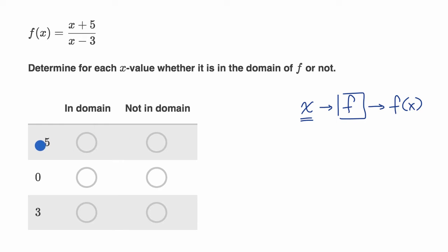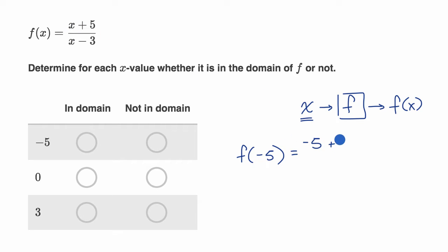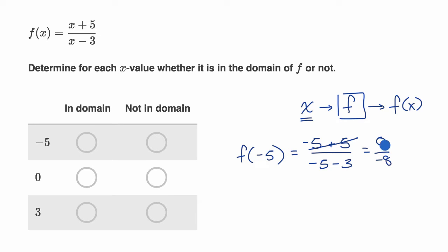So let's try these different values. Is x equal to negative five in the domain of f? Let's see what happens if we try to evaluate f of negative five. In the numerator we get negative five plus five, and in the denominator we get negative five minus three, which equals zero over negative eight. It's just a zero in the numerator, so this whole thing evaluates to zero, which is a completely legitimate output. So x equals negative five is in the domain.